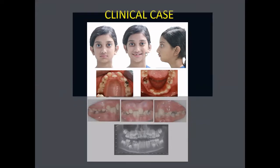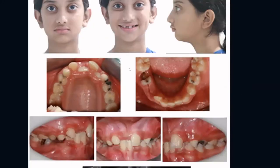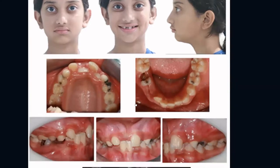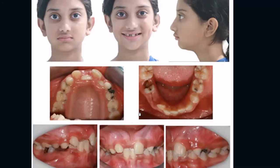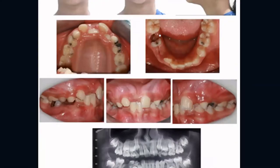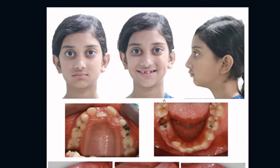Would you like to treat this patient at the age of nine years or not? Yes, of course, because it is a case of interceptive orthodontics and also a case of anterior crossbite. We always treat anterior crossbite the first time we see it, to avoid further problems such as mandibular displacement, gingival problems, attrition, and for the psychological and aesthetic benefits of the patient. As you can see, the incisors are missing from her smile, so we will definitely treat the anterior crossbite even in the mixed dentition stage.